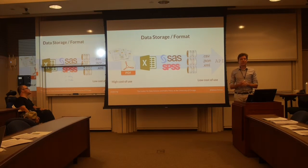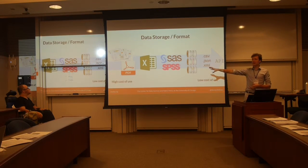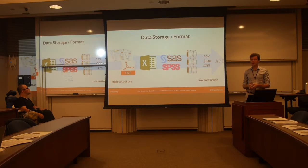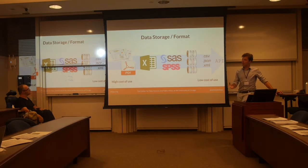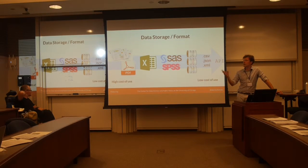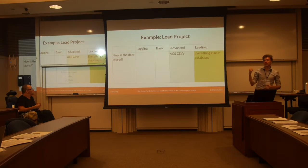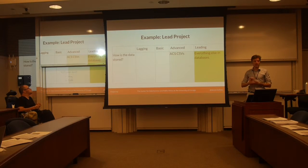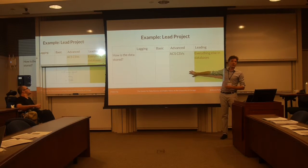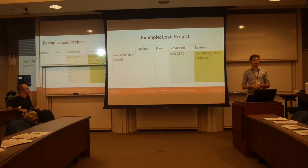Storage and format of your data is super important if you want to work with it. Low maturity means your stuff is on paper — some organizations have data on paper or in PDFs, and that's very costly to work with. Medium maturity might be a proprietary format requiring expensive software to access. High maturity is some standard open format like CSV or JSON that can be fetched through an API by any computer. In the lead project example, some data was on Amazon CSVs, and everything else was in a database that could be plugged into — which is awesome.